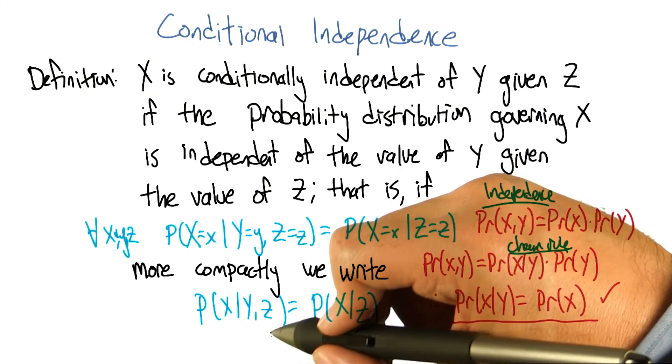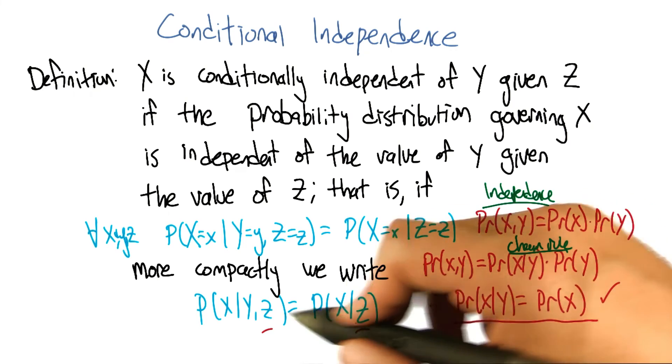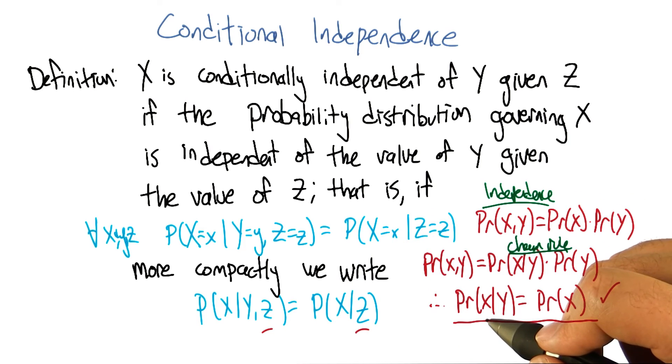As long as there is some Z that we can stick in here that gives us that property, that's great. We can essentially ignore Y when we're talking about the probability of X. Okay, that's pretty cool. That seems more powerful or something. Yeah, and in fact,